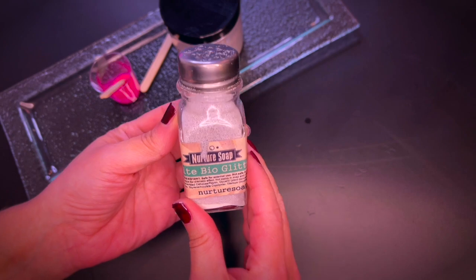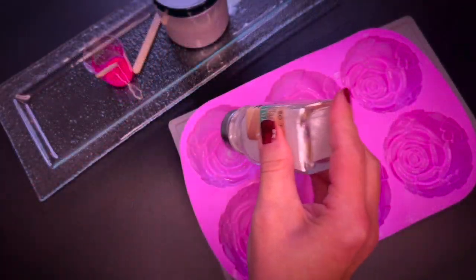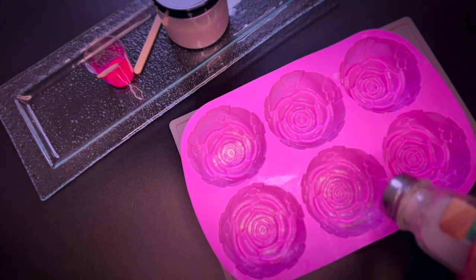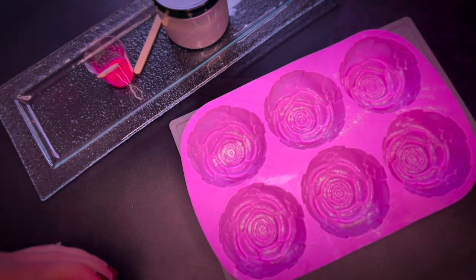Here is some biodegradable glitter that I keep in a salt shaker for easy use. I will start by sprinkling some to the bottom of the mold that is going to be the top part, so to speak.